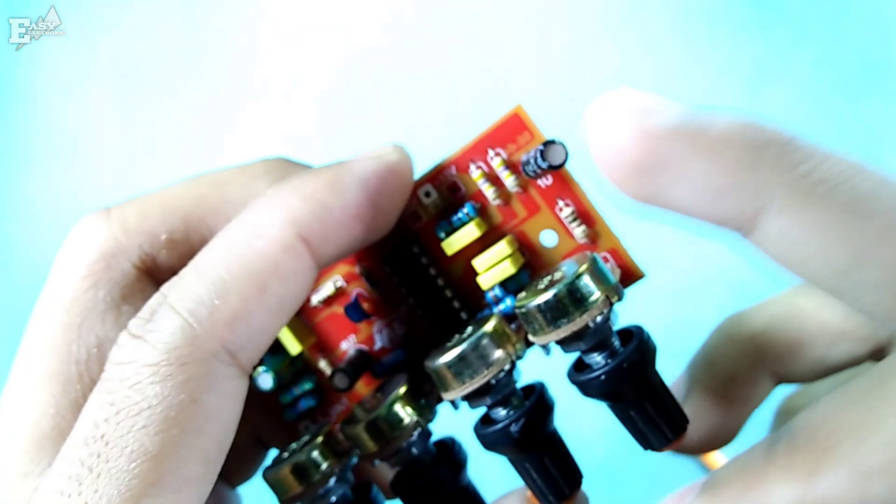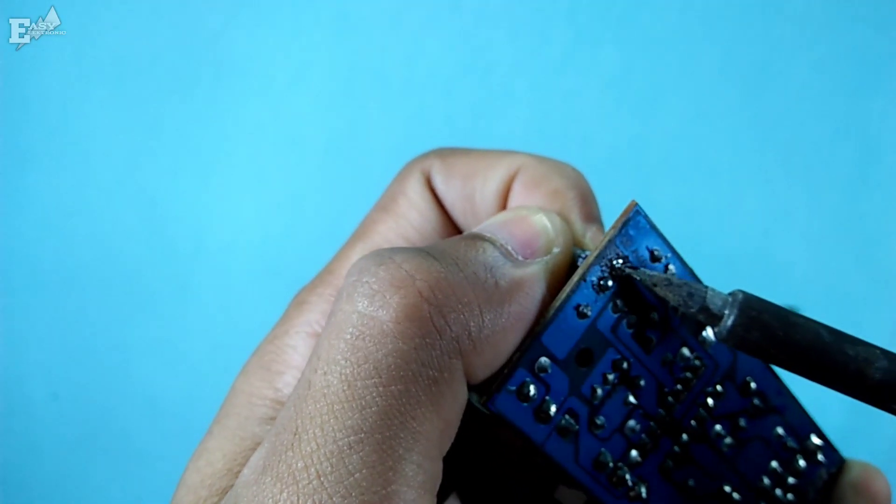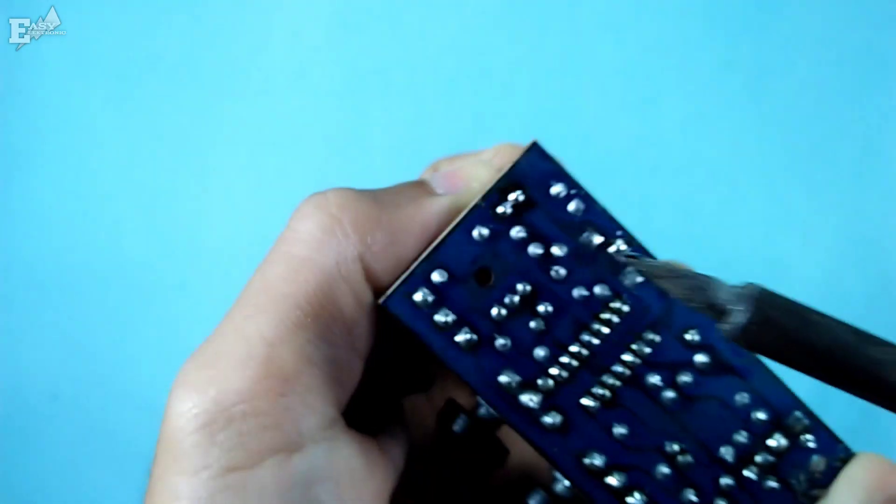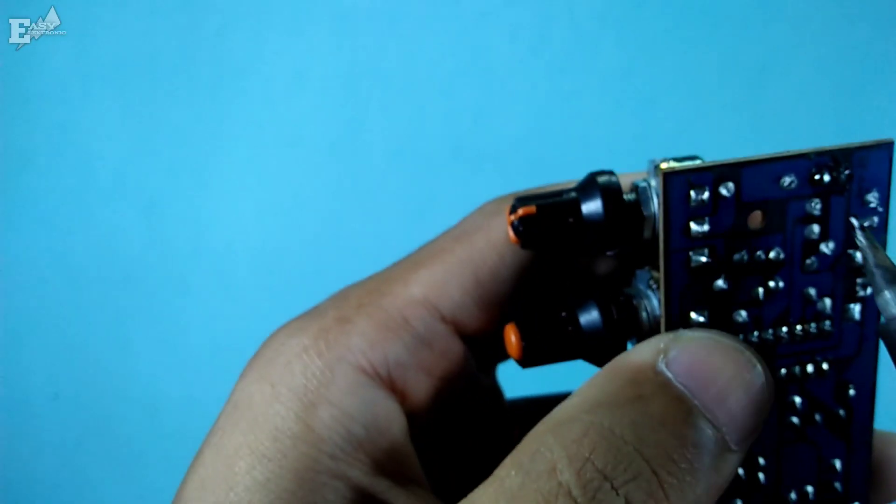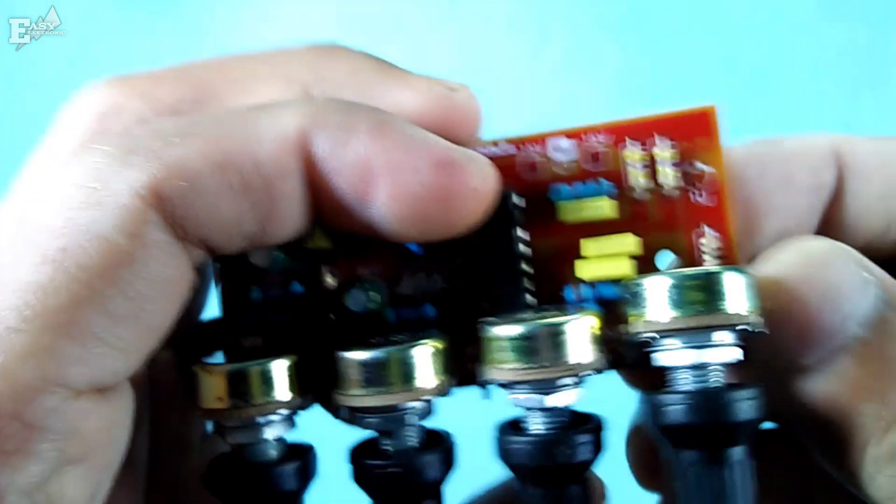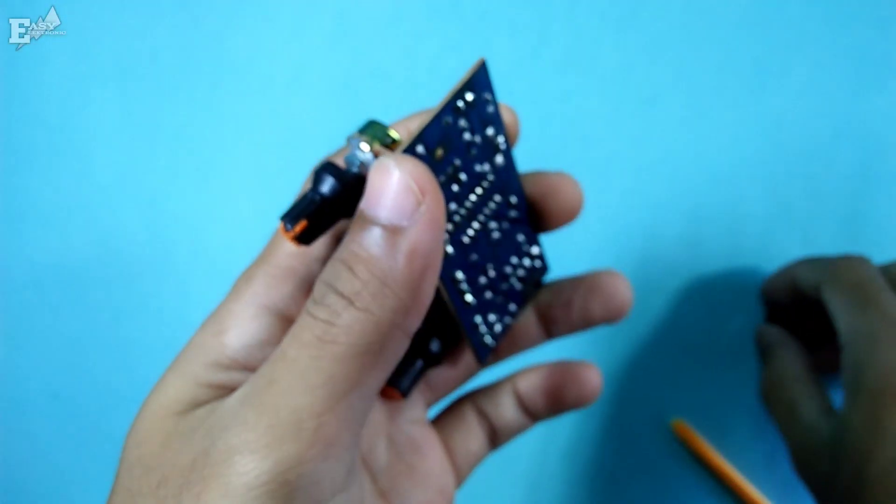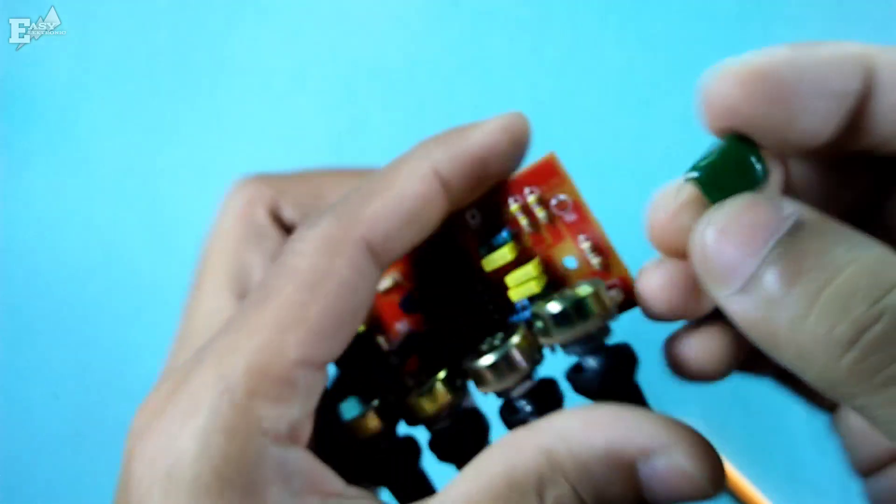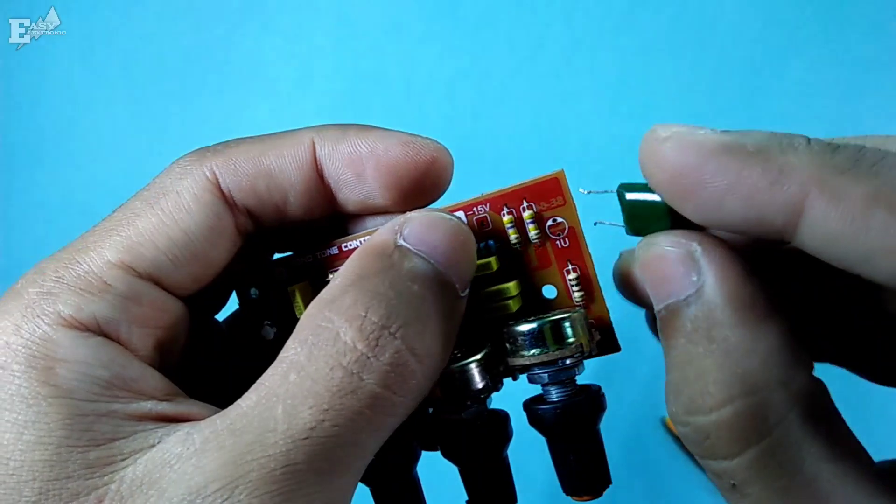This is what it looks like. Let me remove the 1 micro capacitor first. In my opinion, this value is too large, so the low frequencies come out irregularly. Now it's removed.